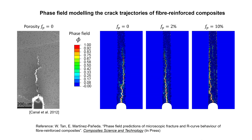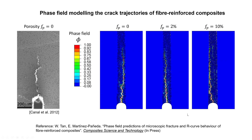We show that by changing the porosity, it will change the crack trajectory. But also, due to crack blunting caused by the voids introduced, the fracture toughness can be increased as well. Thank you.